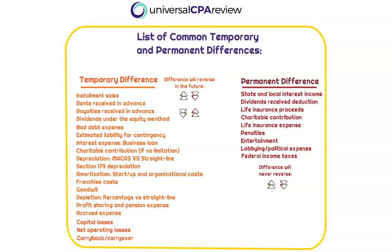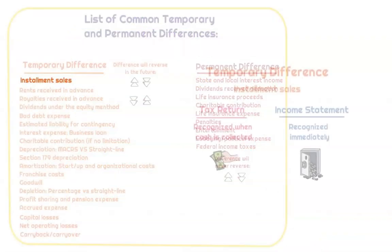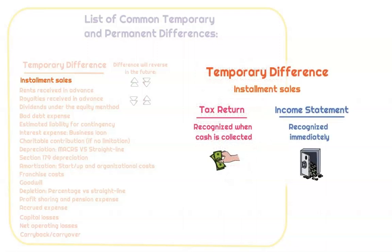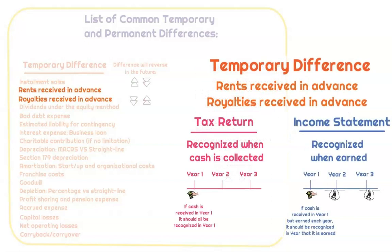A lot of this is stuff we've already gone through. Installment sales is when payments are made in installments — this is going to be recognized on the tax return when cash is received, but it's going to be recognized at some point, so it is a temporary difference. Anytime you see something received in advance, we recognize it when cash is received on the tax return, but not until it has been earned in the financial statements.